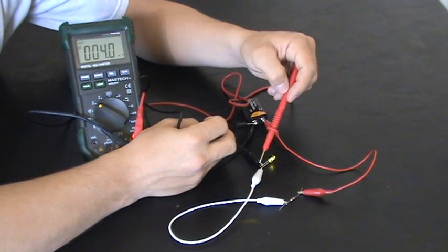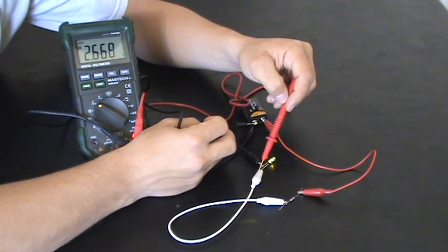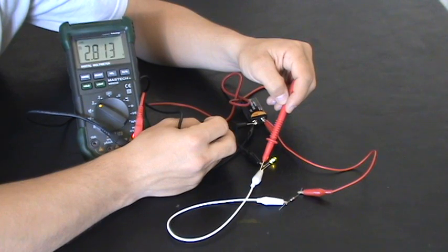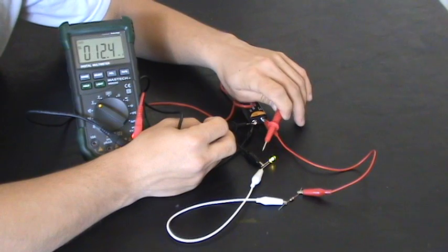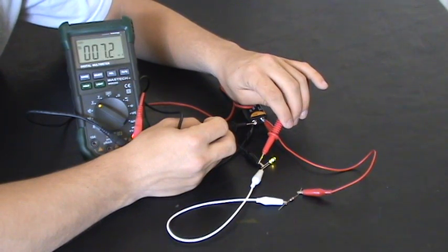And as you can see, it should be the same right before the LED light. And let's see what we get. 2.813. So, that's good. But let's see what we get right after the LED light in our circuit.